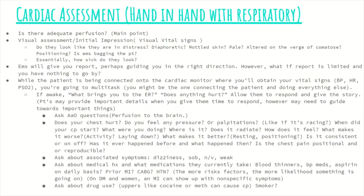The first part of the cardiac assessment is the visual assessment, otherwise known as the initial impression — I like to call it the visual vital signs. Here we simply look at the patient and determine if they look sick. Things we need to be looking out for include mottled skin, diaphoresis, pallor, and altered appearance. Also note things like whether they're slouching in a weird position, seem to be guarding, or if EMS is already bagging them when they walk through the doors.